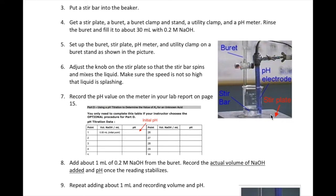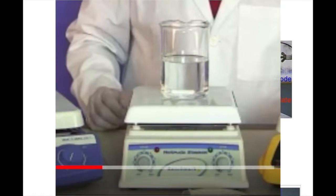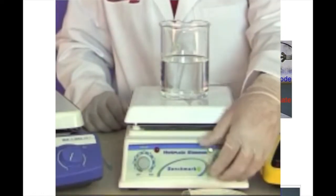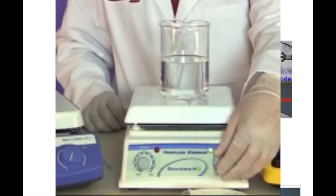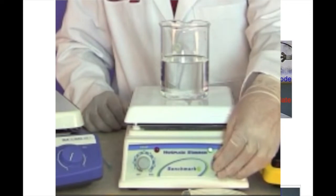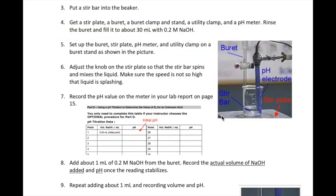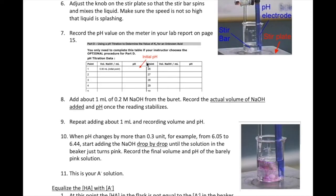Once everything is set up correctly as shown, find the knob on the stir plate that controls stirring and gradually turn it on. You will see the stir bar starts to spin. Adjust the speed of the spin so that mixing occurs but the solution doesn't splash around in the beaker. Go to page 15 of your lab report — this is where you will record the observations for this part.